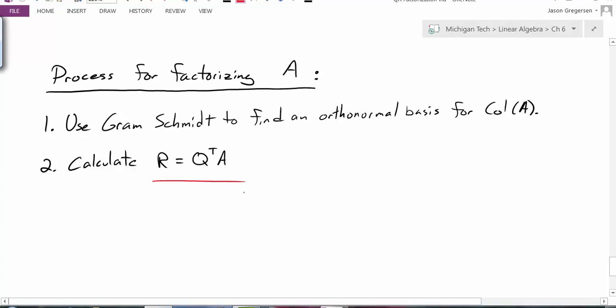Now why does that work? Well, if we know that A is equal to Q times R, and we are able to find that Q by finding the orthonormal basis, then we could multiply both sides by Q transpose to get this.